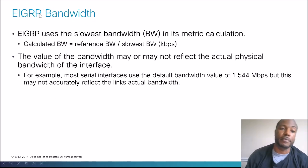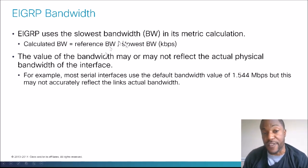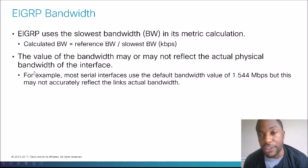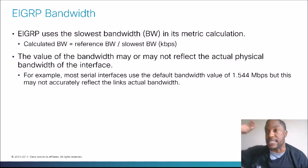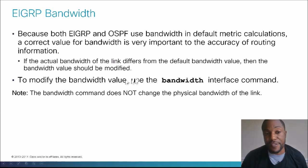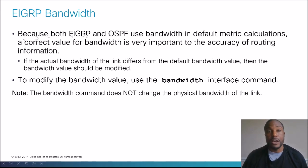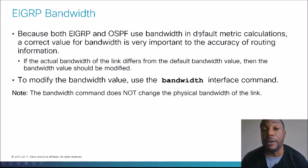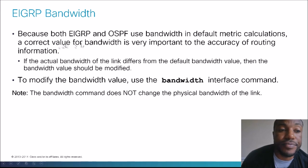How we figure out our bandwidth: the calculated bandwidth is the reference bandwidth divided by the slowest bandwidth. You take the slowest one and divide it by the reference number. The value of the bandwidth may or may not be related to the actual physical bandwidth — you're not actually changing the physical bandwidth, that's decided by your ISP. You're just changing the reference bandwidth. Both EIGRP and OSPF use bandwidth by default, and it's very important to the accuracy of routing information.